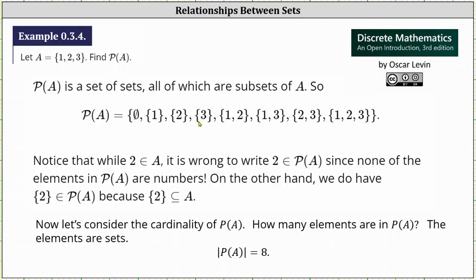Then we'll list the subsets that contain one element from set A, which should be the set containing one, the set containing two, and the set containing three.